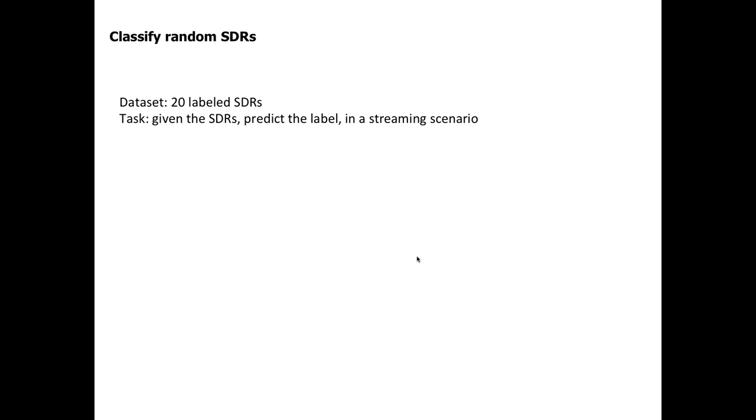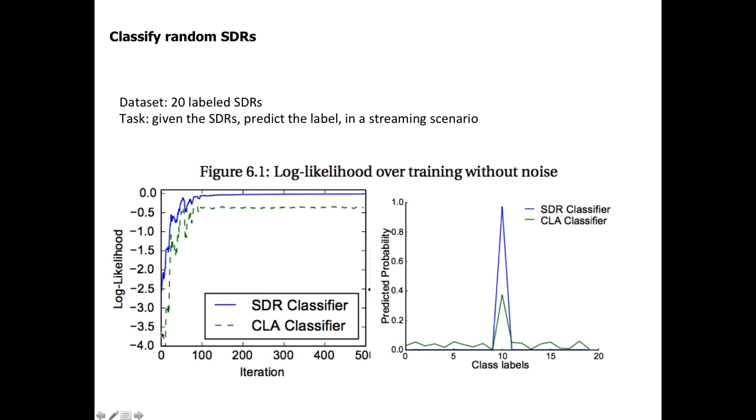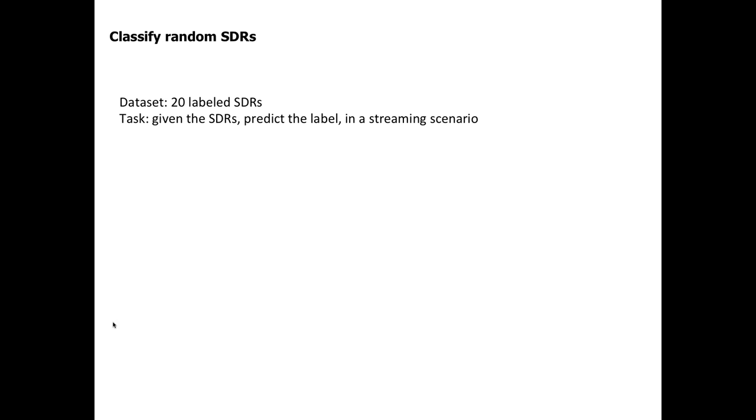Here is a simple experiment classifying random SDRs. I have a small set of 20 labeled SDRs with two classes. Given that SDRs are labeled in an online learning fashion, we compare with the previous CLA classifier on this task. At each time step, I randomly select one SDR and feed it to the network. The input is a stream of random SDRs — this is just a unit test for the algorithm.